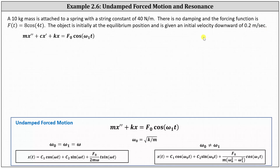We'll be using the differential equation mx'' + cx' + kx = F₀·cos(ω₁t) to model the motion of the mass. Here, m is the mass, c is the damping or friction constant — which in this case will be zero because there's no damping — k is the spring constant, and F₀·cos(ω₁t) is the forcing function.